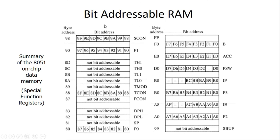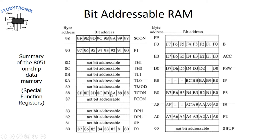The SFR section has addresses from 80 hex to FF hex, with 80 hex as the starting address and FF hex as the final address. Only SFRs are present in this region, and these SFRs have special functions used to control peripherals or serve as data SFRs. Some of the SFRs are bit addressable while others are byte addressable. SFRs with individual bit addresses are bit addressable, whereas the remaining SFRs require access to the entire 8-bit byte.